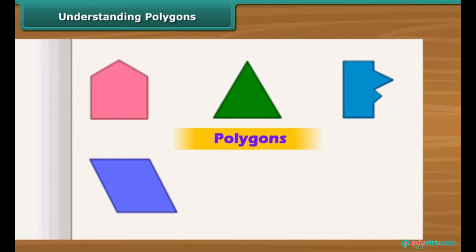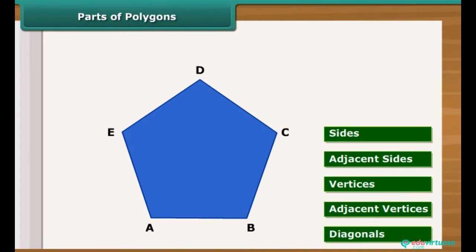A figure is a polygon if it is a simple closed figure made up of line segments. The line segments AB, BC, CD, DE and EA form the polygon ABCDE.